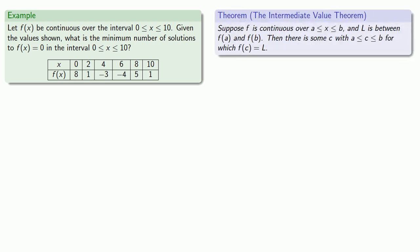One way of looking at the Intermediate Value Theorem is through what you might call the Goldilocks Principle. Suppose I'm trying to hit a certain function value. At some value of x, I might be too small — my function value might be less than what I want. And at some other value of x, my function value might be too big. Then the Intermediate Value Theorem guarantees that, as long as the function is continuous between the two points, some place in between is going to be just right.